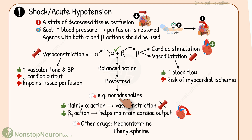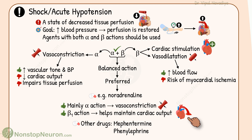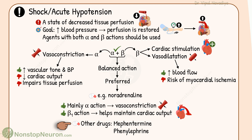For example, noradrenaline. It mainly has alpha action. The vasoconstriction produced by it balances vasodilatation by beta receptors, and beta-1-mediated cardiac stimulation helps maintain cardiac output, which balances the tendency to decrease cardiac output by alpha receptors. Thus, balanced action is produced. Other drugs that can be used are methantermine and phenylephrine.